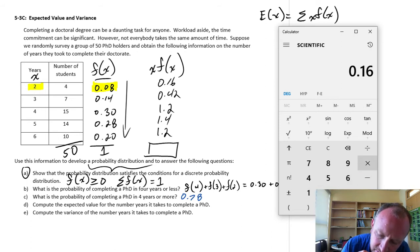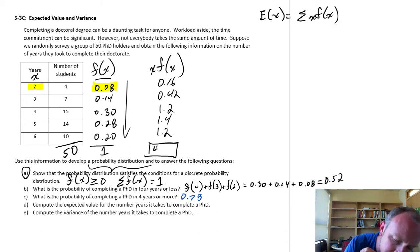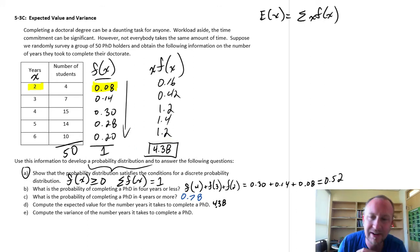0.16 plus 0.42 plus 1.2 plus 1.4 plus 1.2, and we have 4.38. So there's our 4.38. So on average, it takes 4.38 years to complete a PhD. Simple as that.